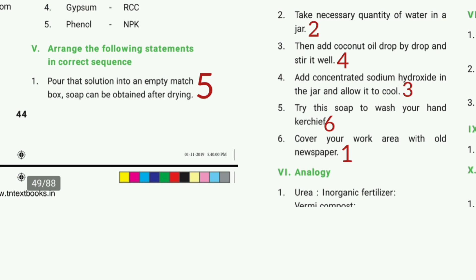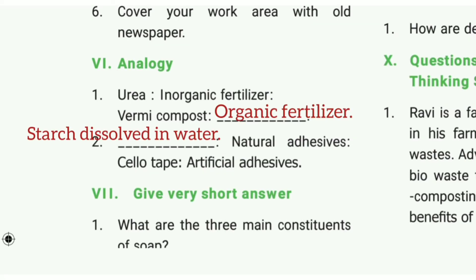Sixth step: Use the dry soap to wash your handkerchief. Analogy — First one: Urea is to inorganic fertilizer as vermicompost is to organic fertilizer.